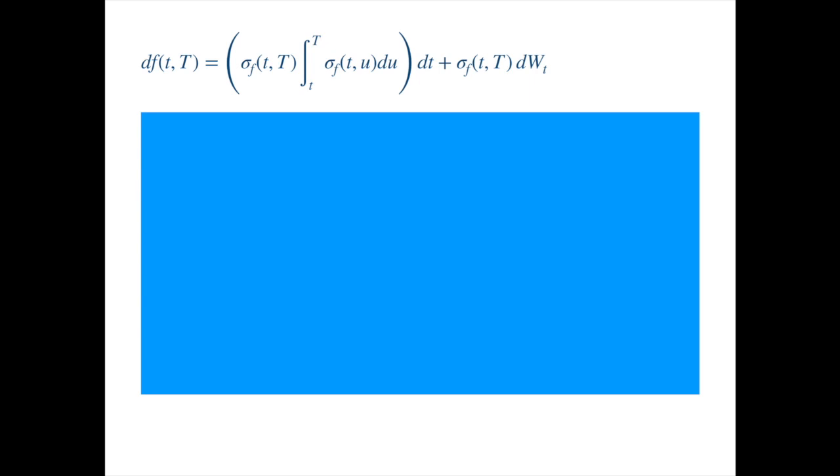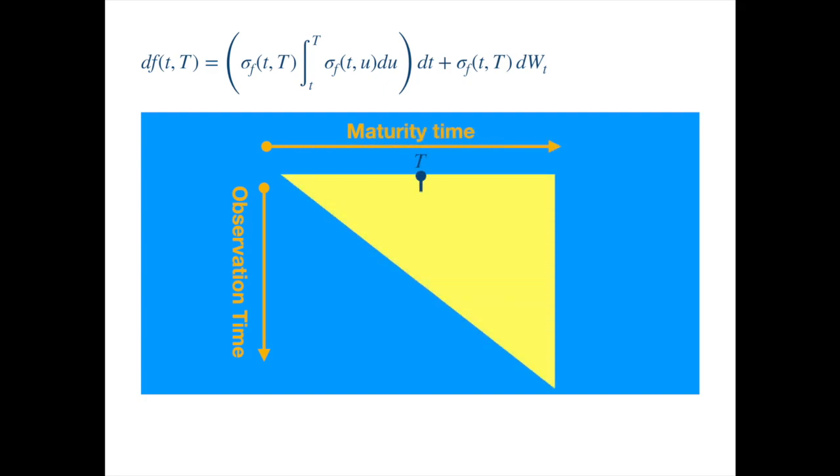Let's go back to first principles. We know from the previous video that the HJM SDE represents the dynamics of an instantaneous forward, whose maturity time is fixed.